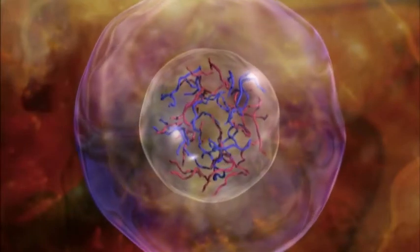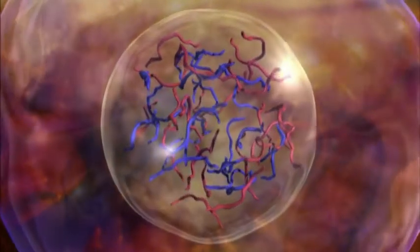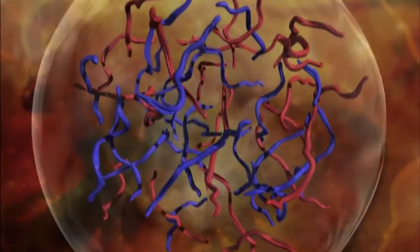Inside most every cell in your body, you have the same 46 chromosomes, carrying the same genes. But not all the cells in your body are the same.